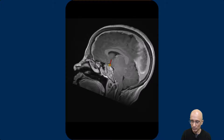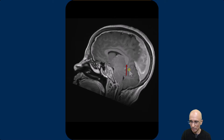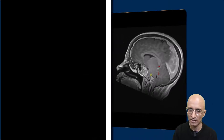You can also identify the distended pituitary gland, drooping of the splenium of the corpus callosum, also called the drooping penis sign.